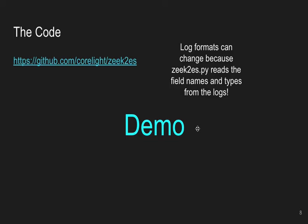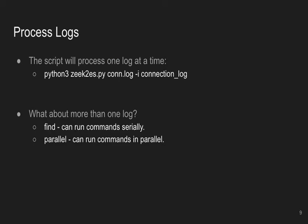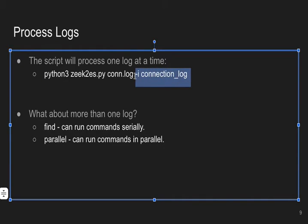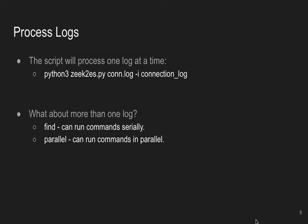Back at the slides: you can process one log at a time with the basic command — run python with the script, specify your log, and optionally your index. Leaving the dash-i off creates the index from the log's file name information, just showing different options. If you want to process more than one log — and with Zeek you get a log per hour, 24 hours a day, across many log types — the numbers add up quickly.